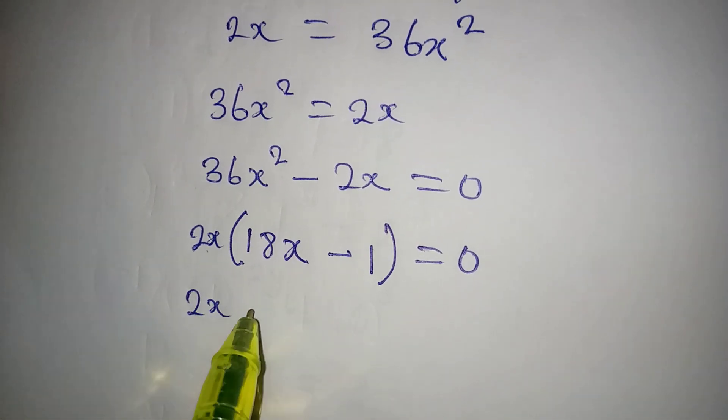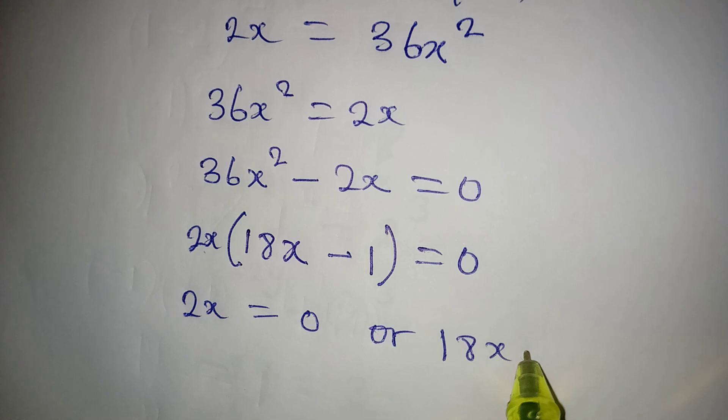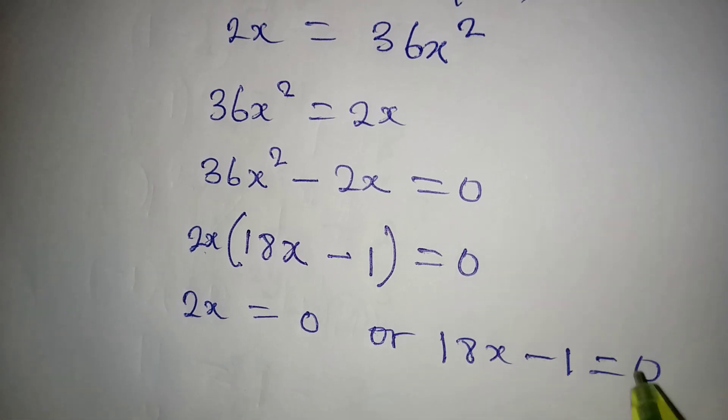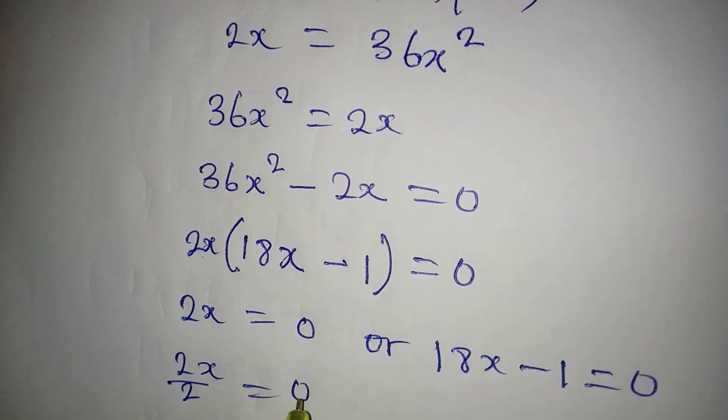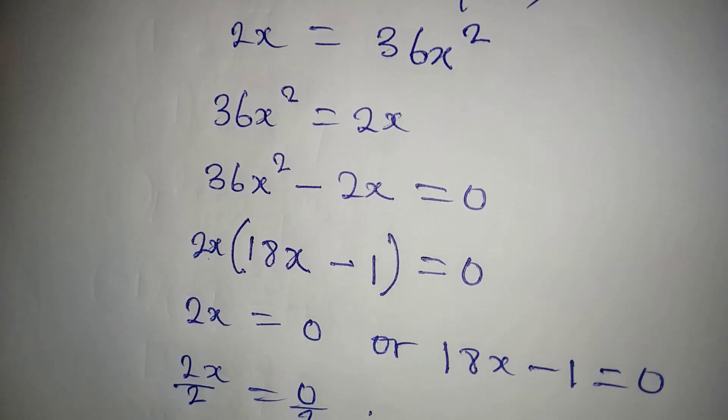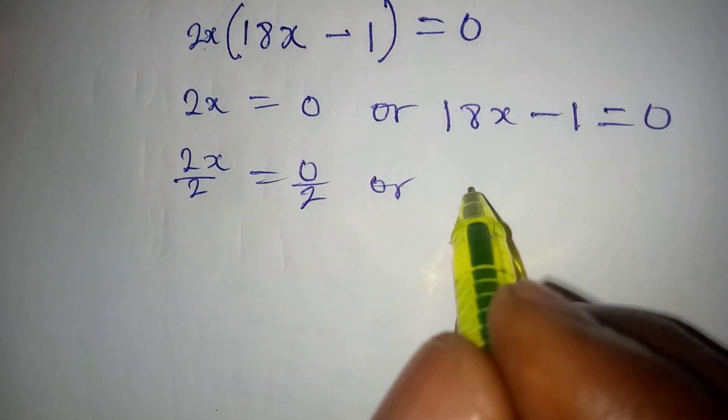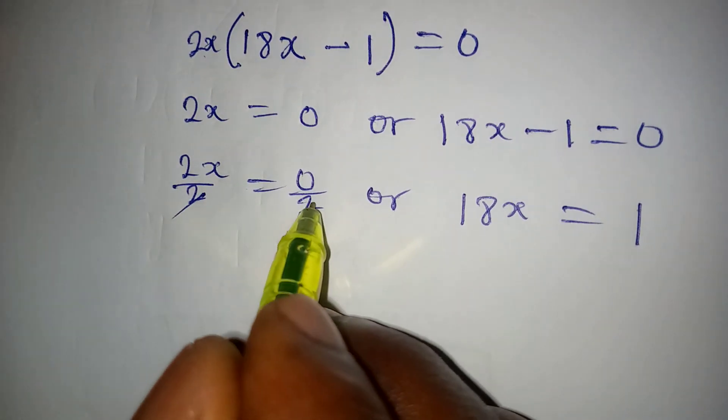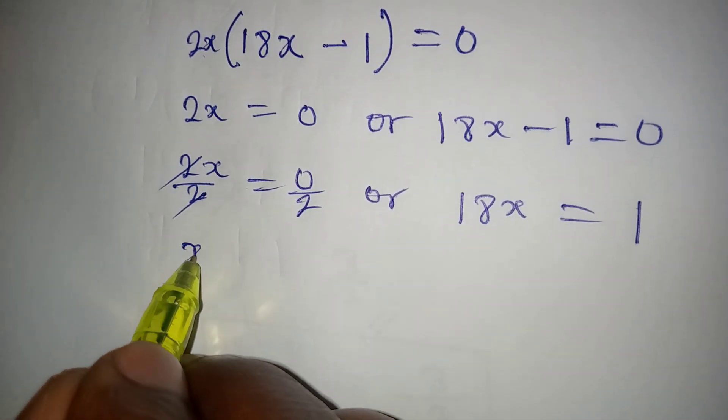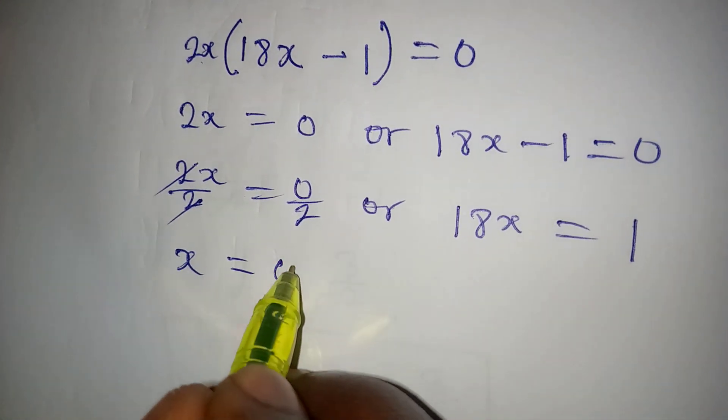From here, 2x is equal to 0, or 18x minus 1 is equal to 0. 2x over 2 is equal to 0 over 2, or 18x is equal to 1. This and this will go, so that x is equal to 0 over 2, and that is the same thing as 0.